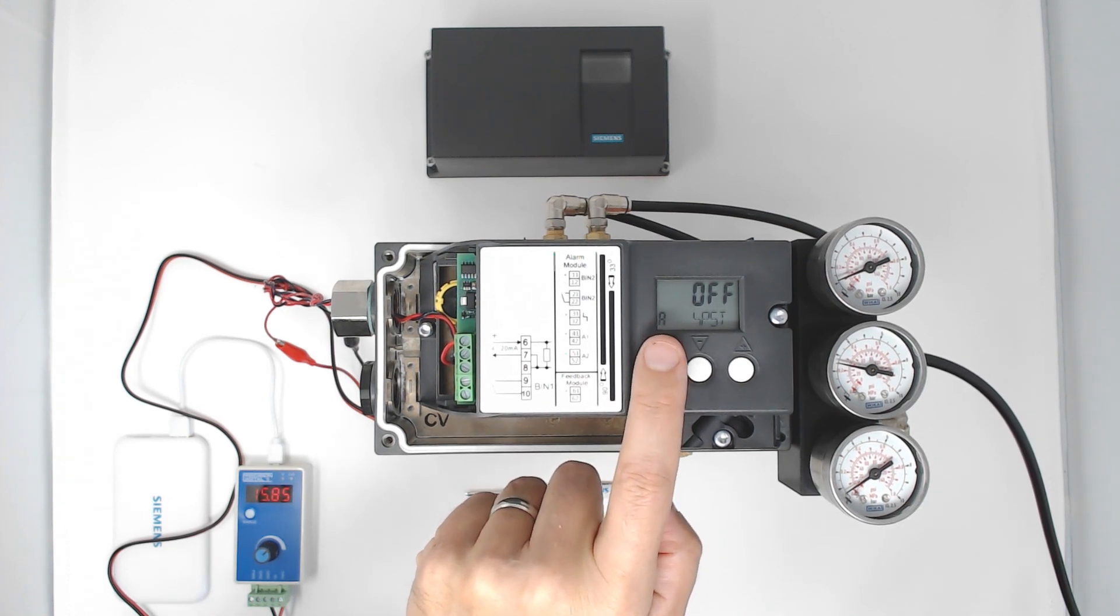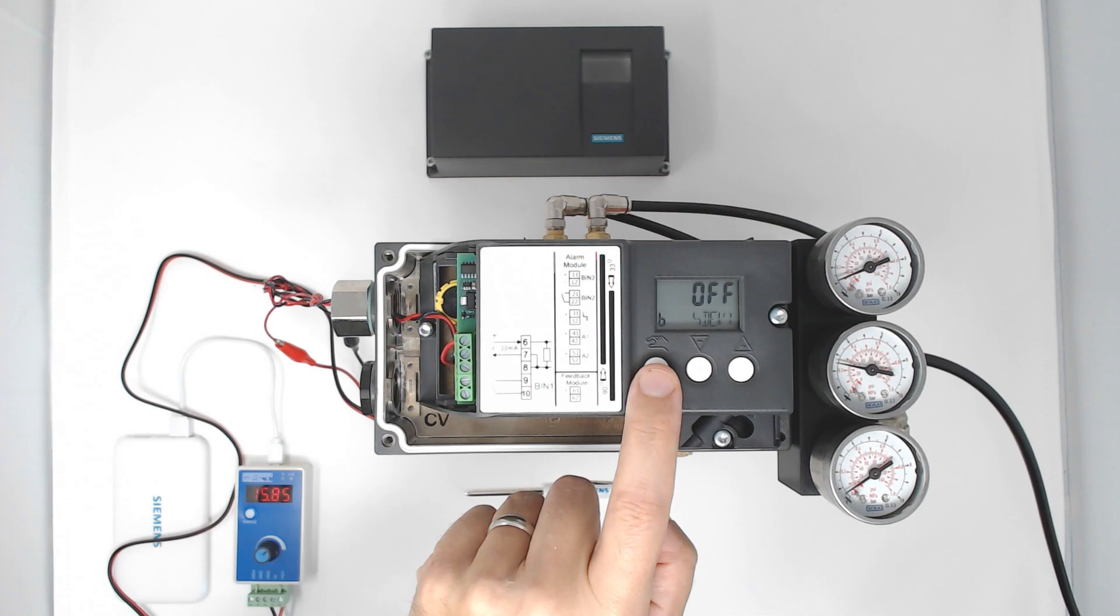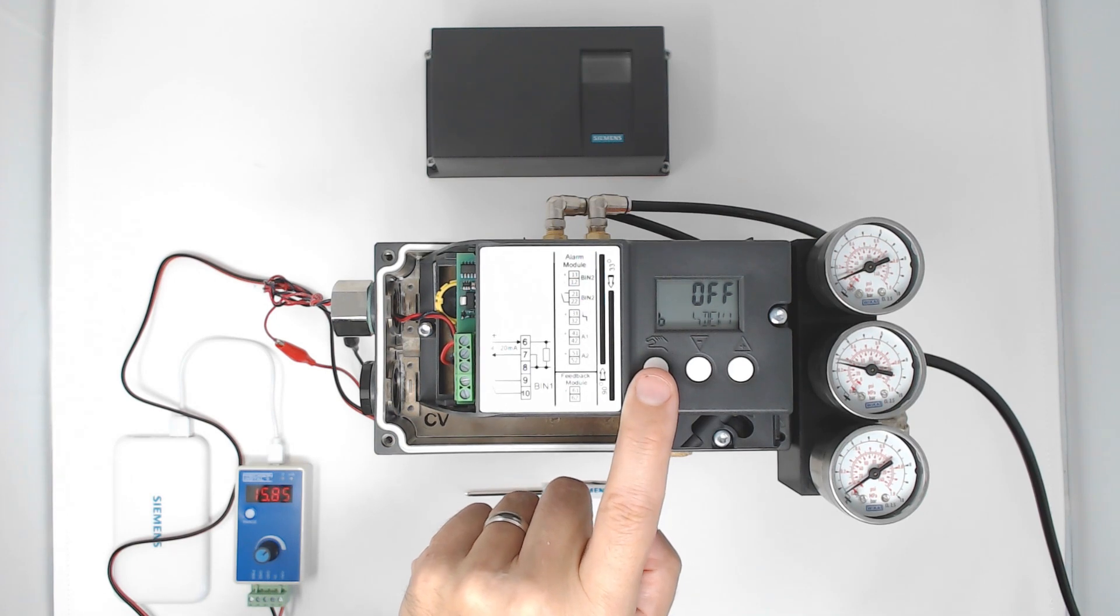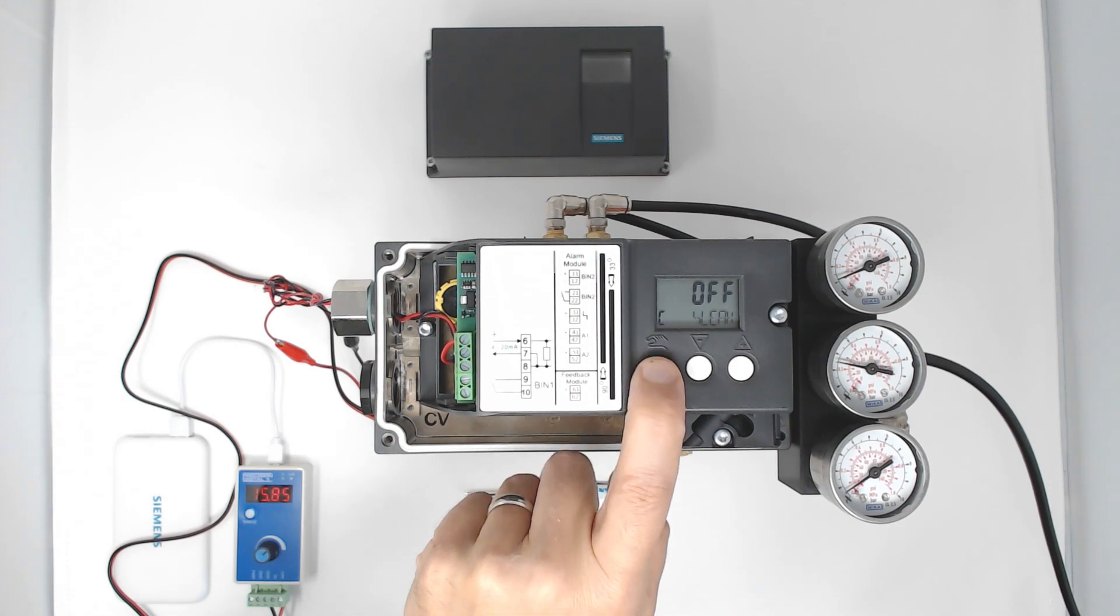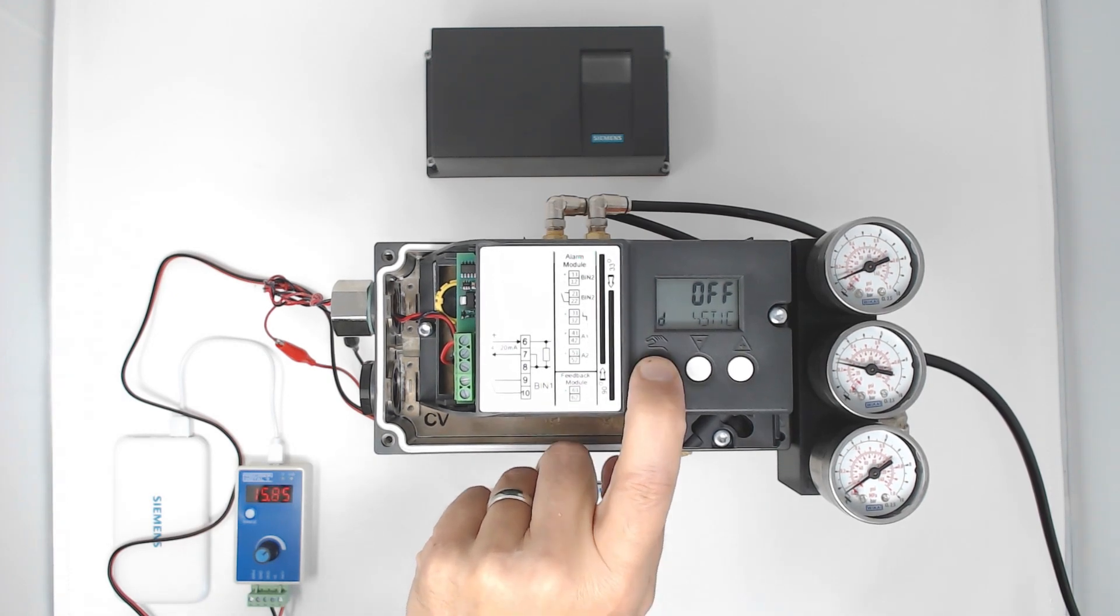Diagnostic A is the partial stroke test that you can perform. B is the deviation, whether the valve is deviating from the original initialized state. C is the leakage detection, D is the stiction, and E is the dead band.